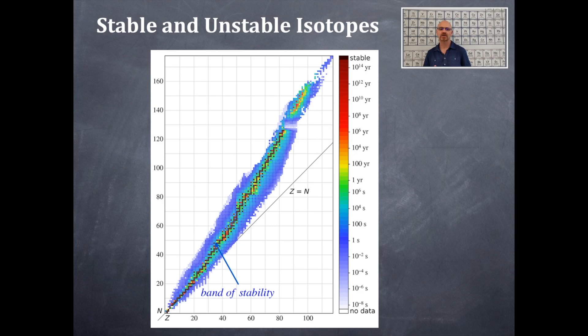But then it starts moving up to greater number of neutrons with the band of stability, which is that black line that's going right through the middle there.